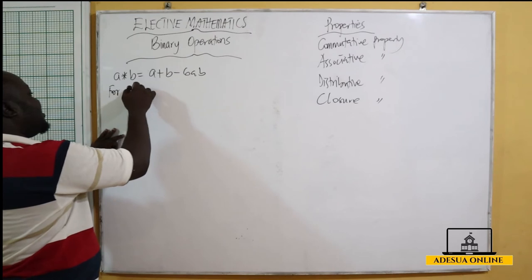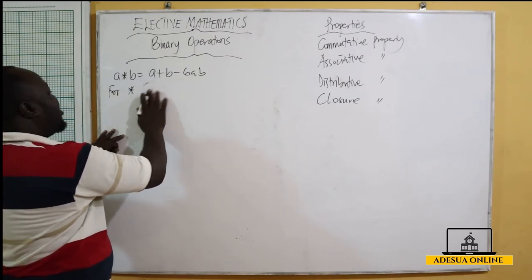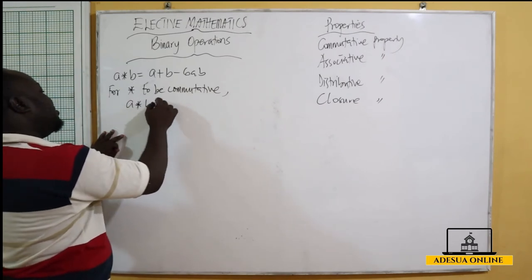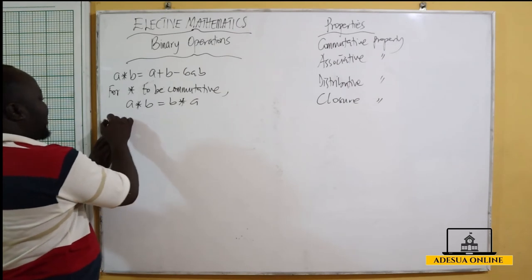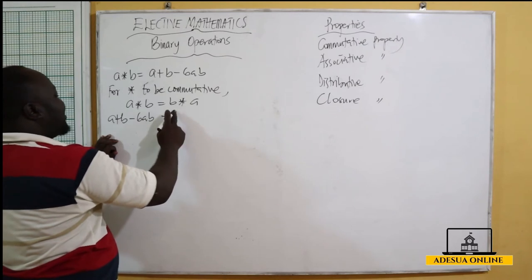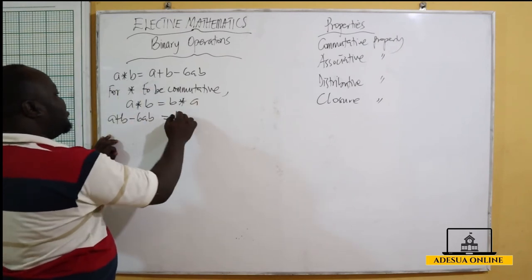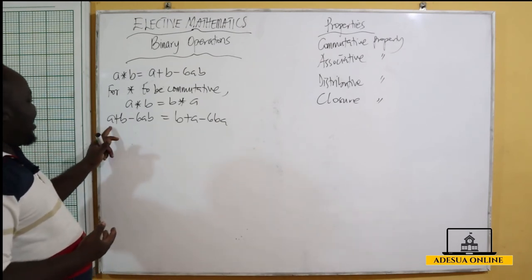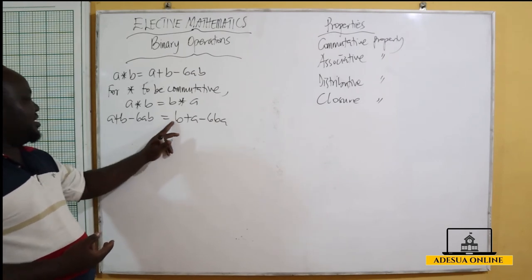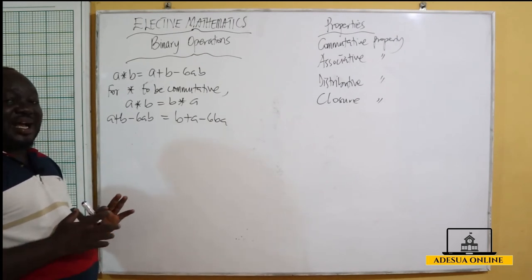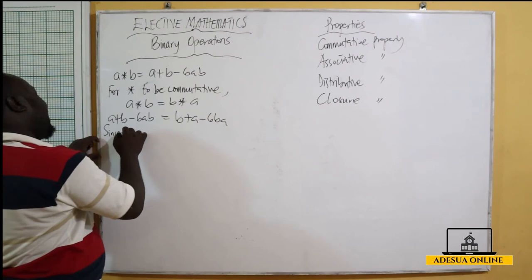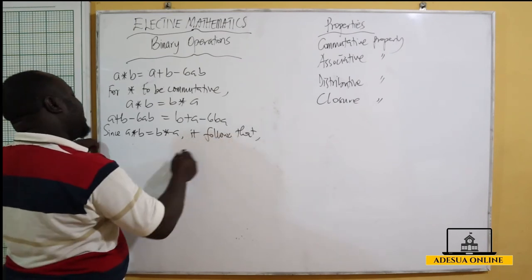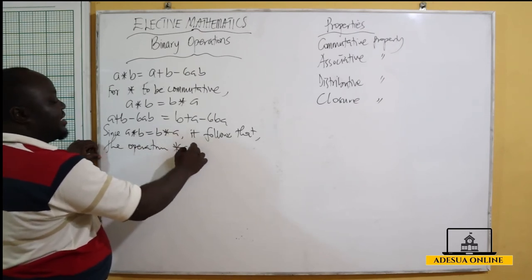For the operation star to be commutative, it means that a★b should equal b★a. Now, a★b = a + b − 6ab. For b★a, my a becomes b and my b becomes a, so b★a = b + a − 6ba. Comparing the two: positive a, positive b, and −6ab versus −6ba — since addition and multiplication are commutative, a★b equals b★a. Therefore, the operation star is commutative.